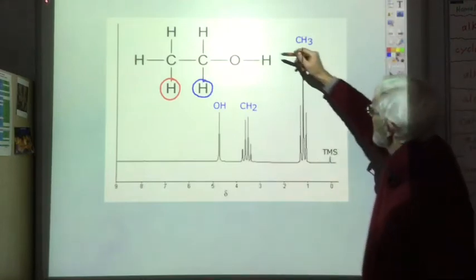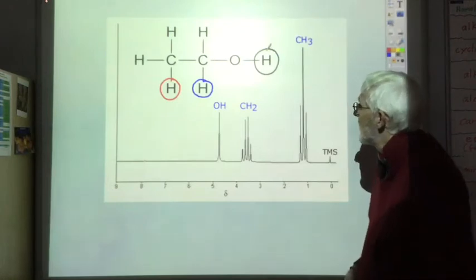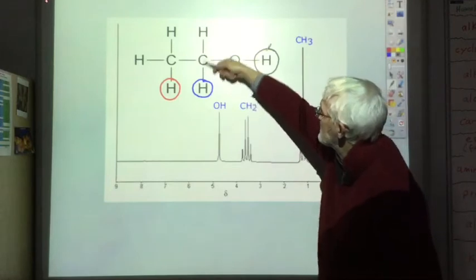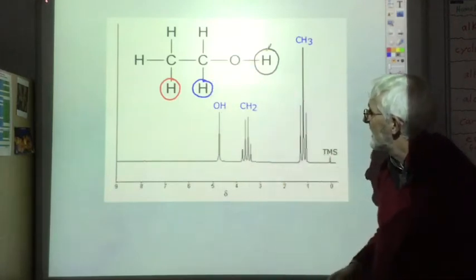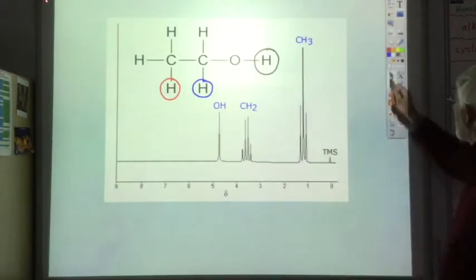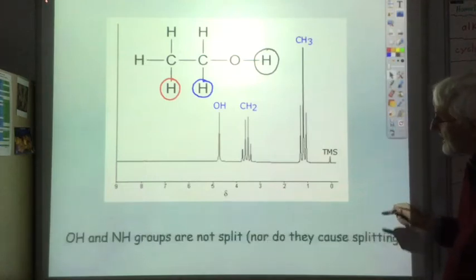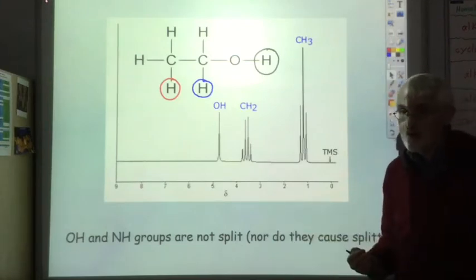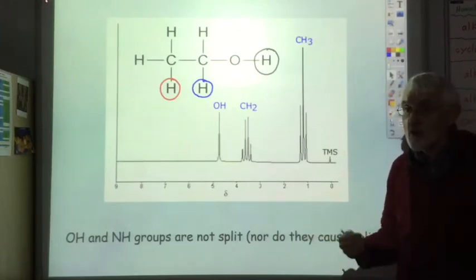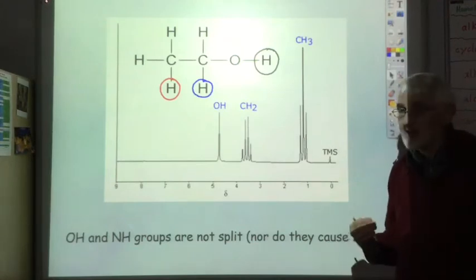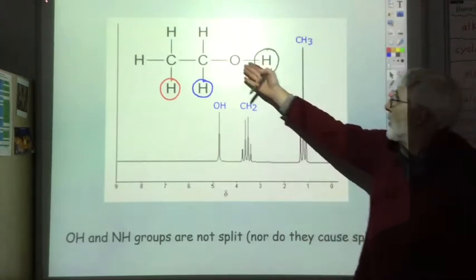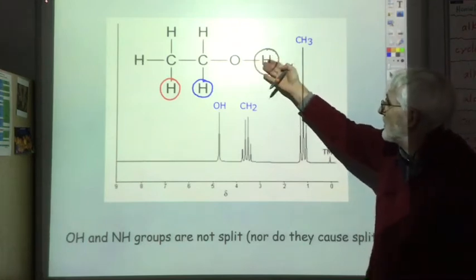The final H — on the OH group — is a little confusing, because its neighbouring carbon atom has got two hydrogens, but we just get a singlet. In fact, what we find is that OH and indeed NH groups are not split and nor do they cause splitting. So the splitting is only for hydrogens attached to carbons, and they're only split by hydrogens attached to neighbouring carbons. The OH will not cause splitting and will not be split itself.